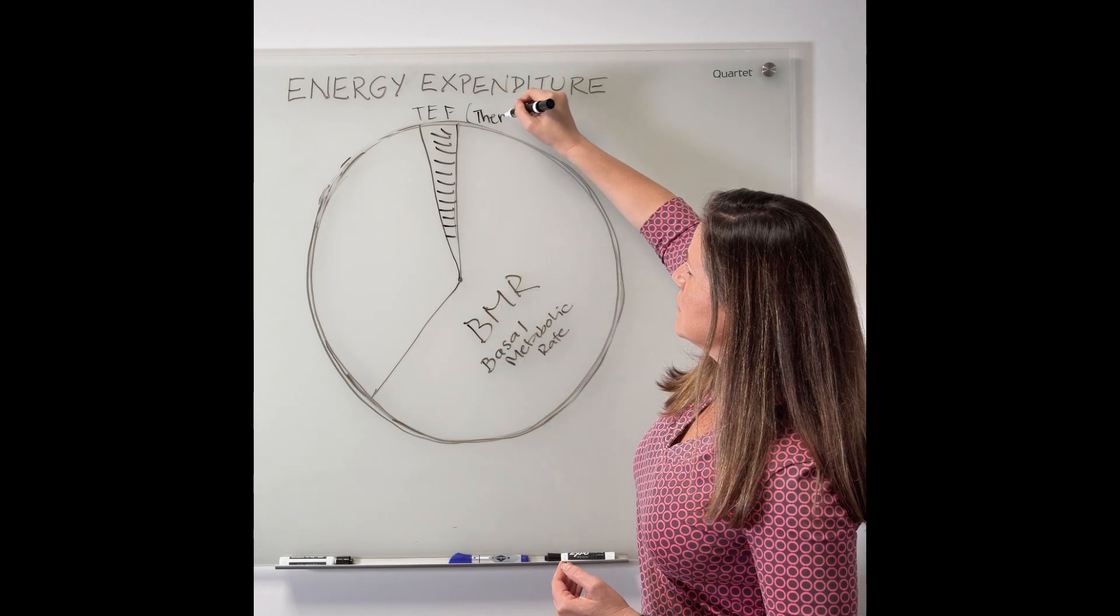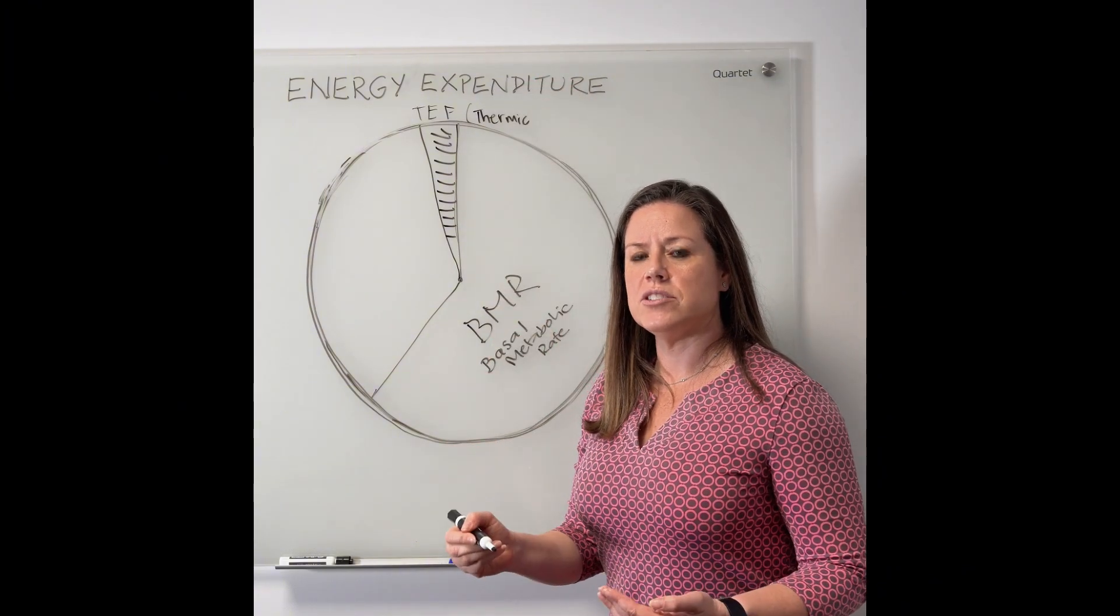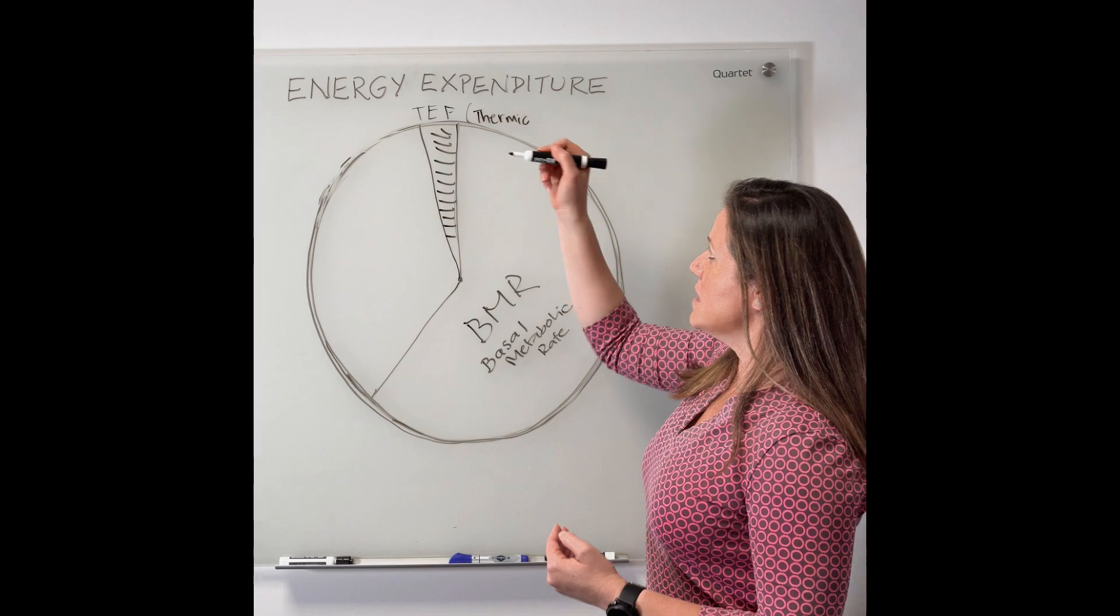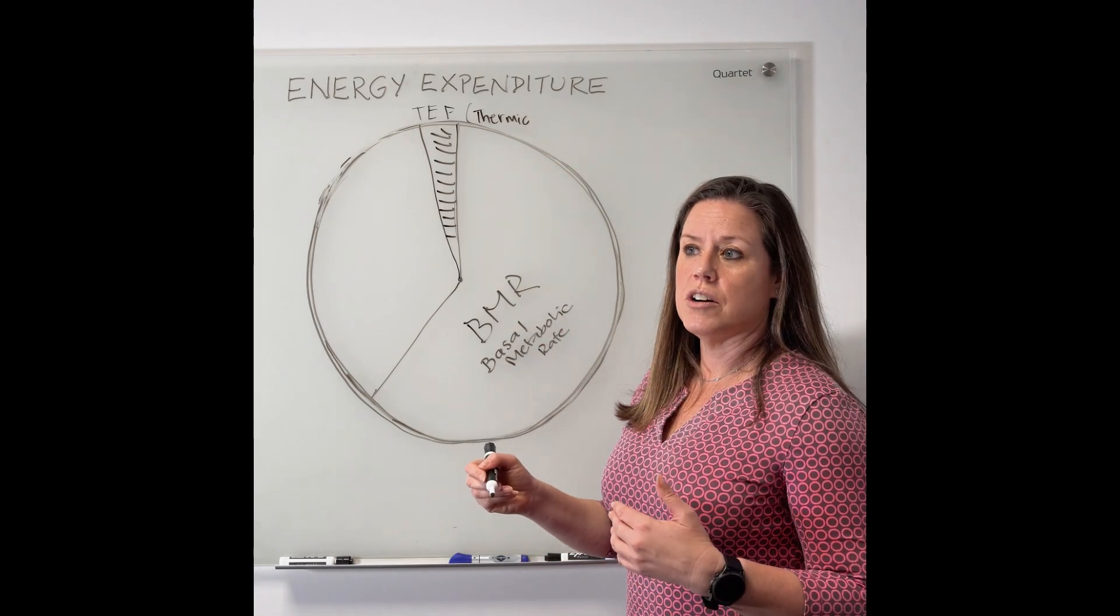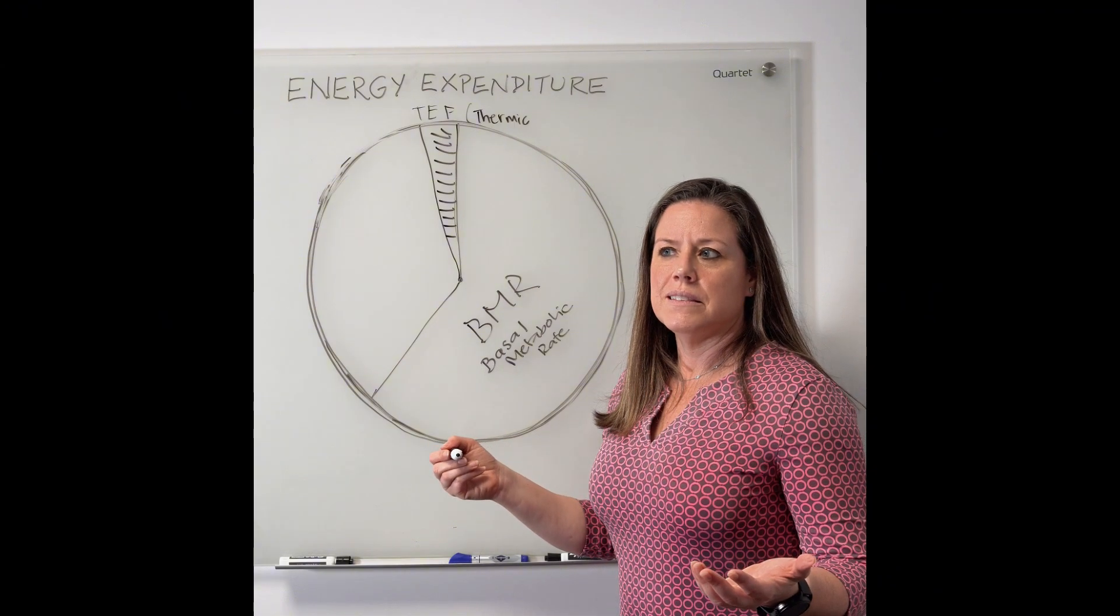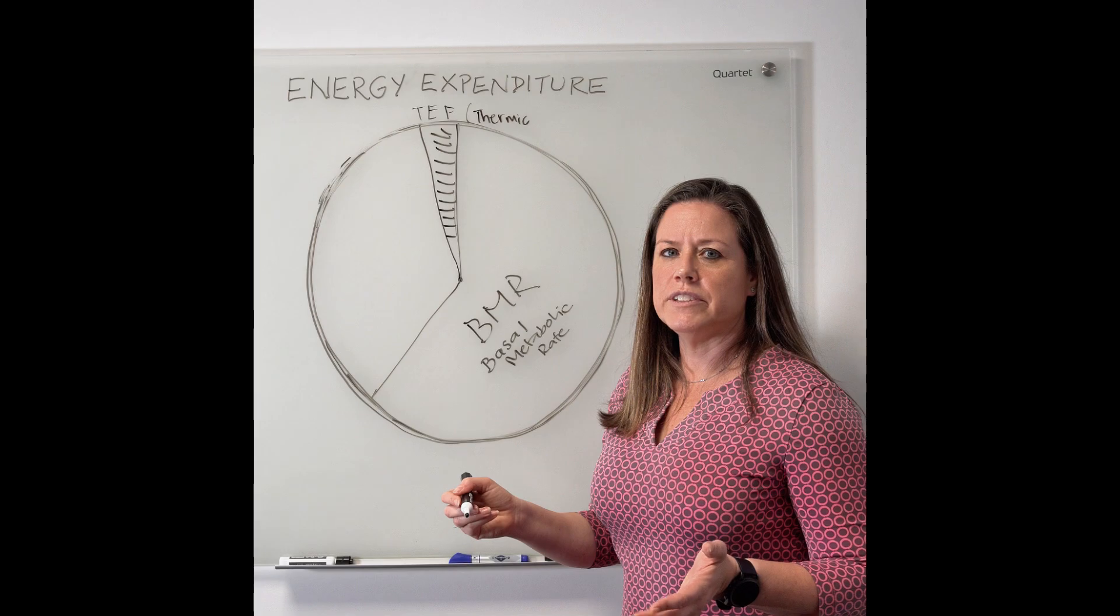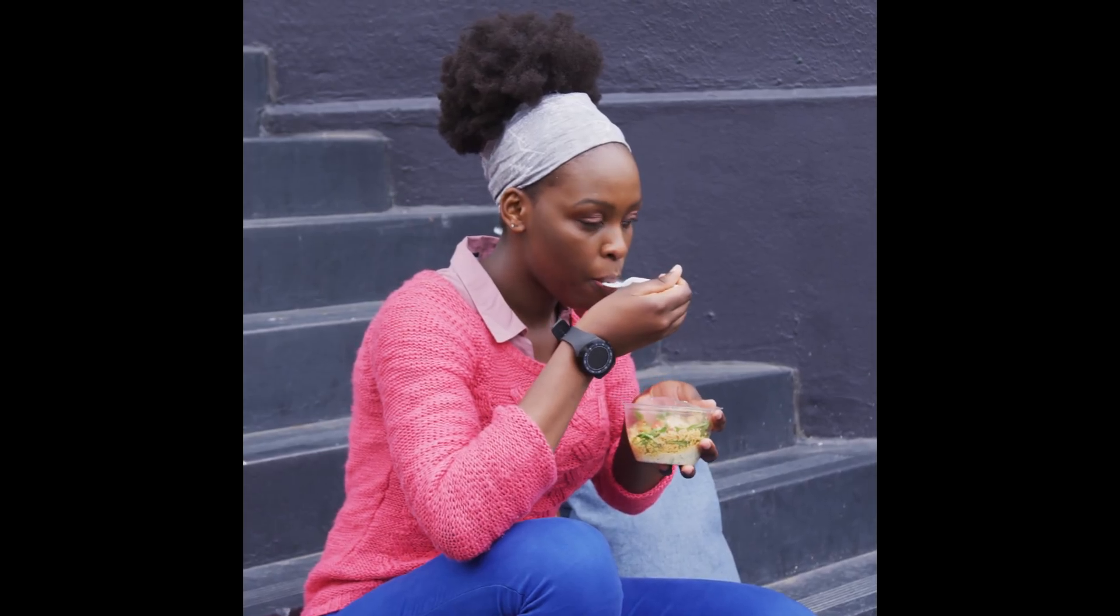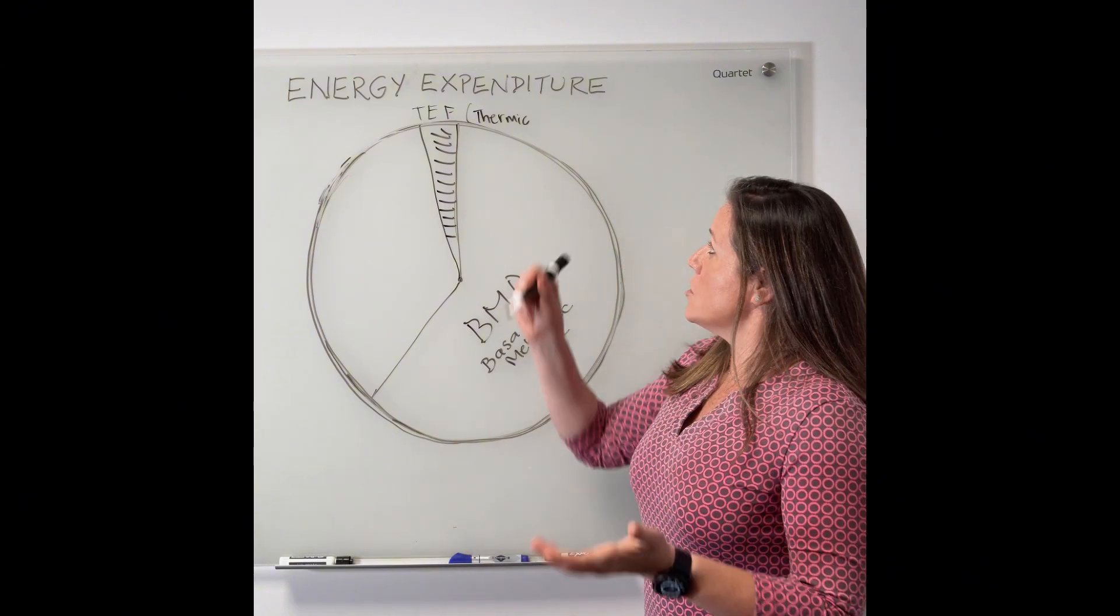So it does cost the body some energy to digest your food. And the highest thermic effect is protein. So it's believed that about 100 calories of protein is the equivalent of really 70 to 80 calories because it costs the body some energy to digest that protein. So that's great.